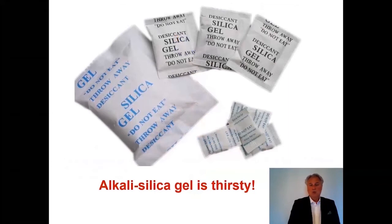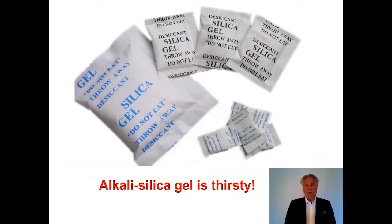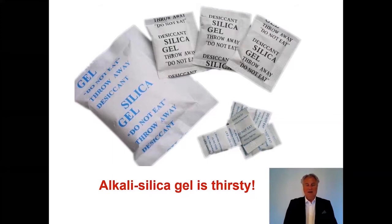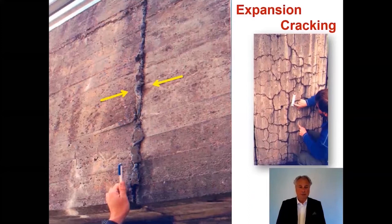What is happening is that silica minerals in the aggregates, in the high pH environment of the cement paste, will start to dissolve and it will produce alkali-silica gel. This alkali-silica gel is very thirsty — it absorbs a lot of water. We know about silica gel when buying a camera, where it's placed inside to absorb humidity. That's exactly what happens in concrete.